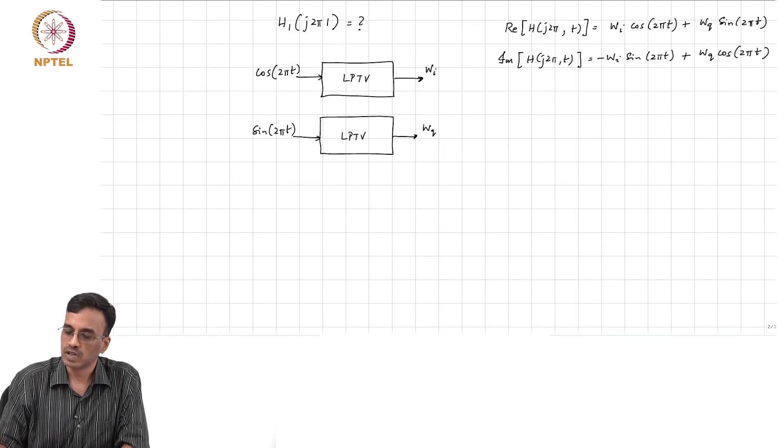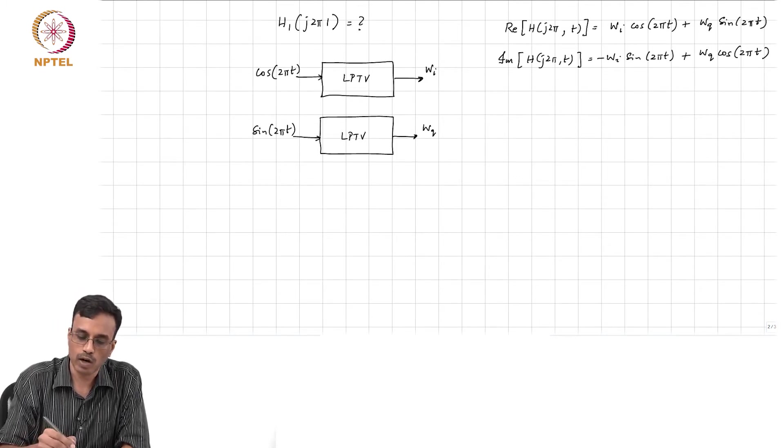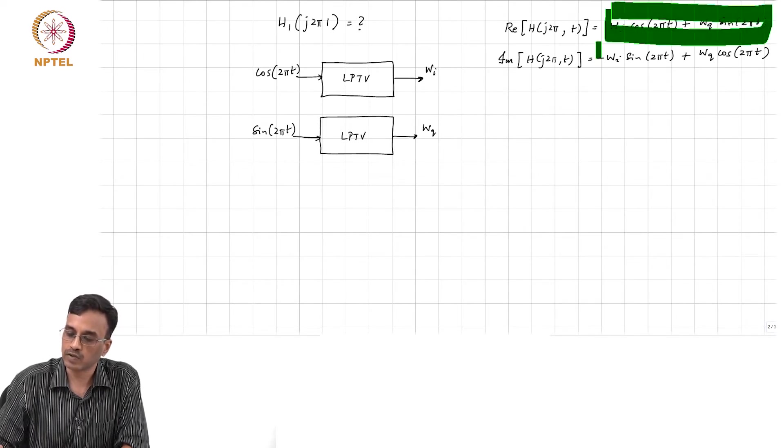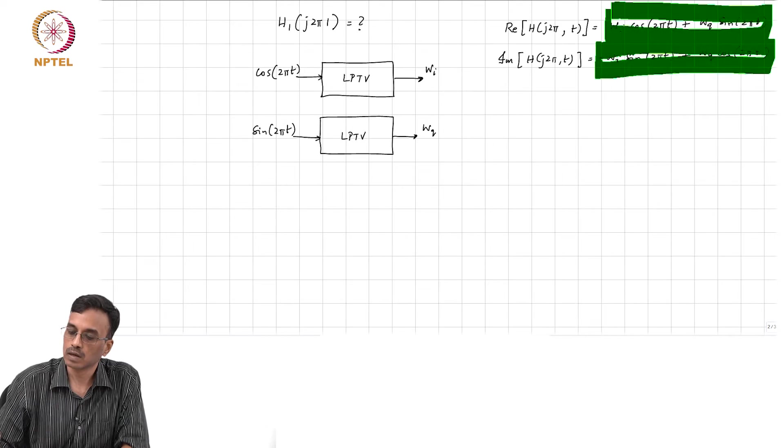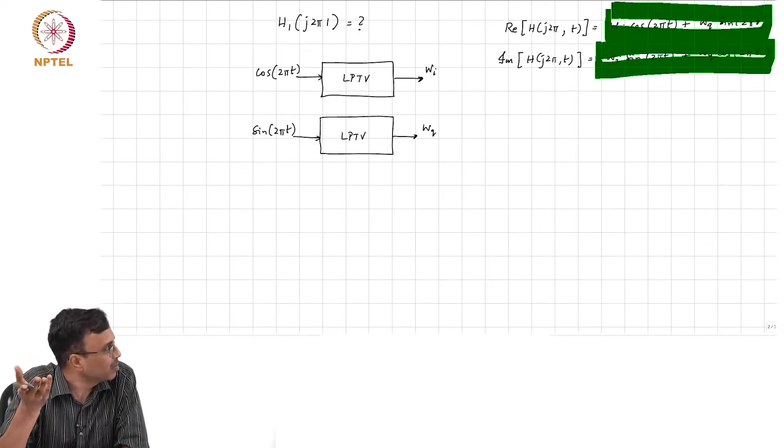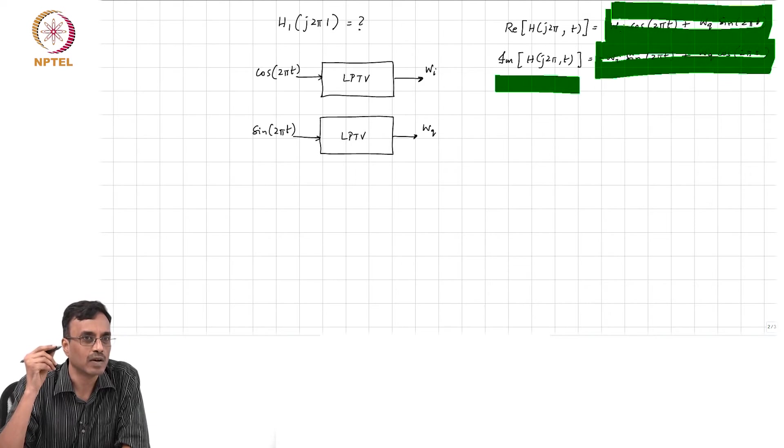How do I - I mean, this will, because our system is LPTV - when you plot this waveform, what would you expect to see? What kind of waveform should you get? I mean, this is nothing but the gain experienced by the sinusoid, correct?